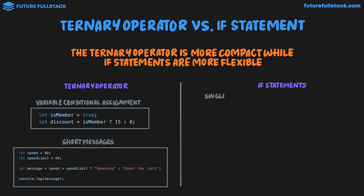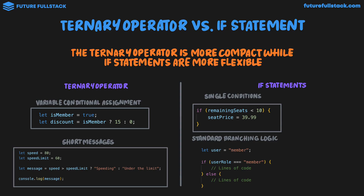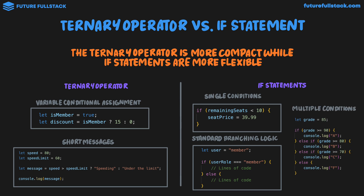For if statements, they're commonly used for single conditions, like setting the seat price on a flight booking website depending on how many seats are left. The next common case is standard branching logic — if a user is a member, you'd ordinarily run several lines of code; if they're not, you'd run different lines of code. What's important to realize is that typically the if and else blocks contain multiple lines of code — we're using if and else to set core logic in our program, not just to set the value of a variable. The final use case is multiple conditions, using if, else if, and else.